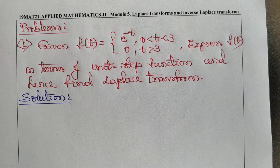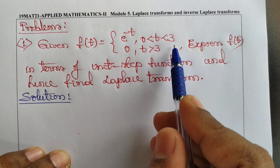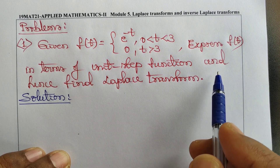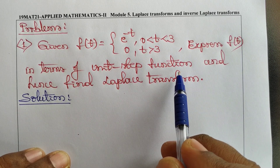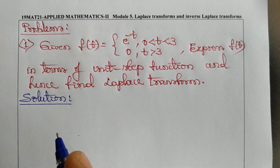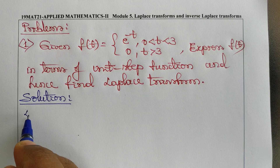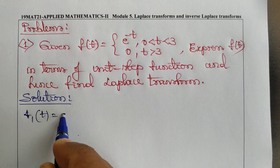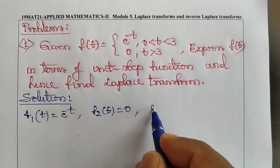Problem 1: Given f(t) = e^(-t) for 0 < t < 3, and 0 for t > 3. Express f(t) in terms of the unit step function and hence find the Laplace transform. Here, f₁(t) = e^(-t), f₂(t) = 0, and a = 3.